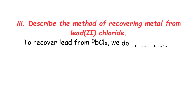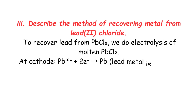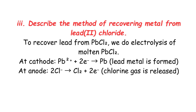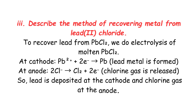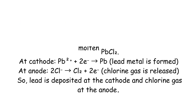Long Question 3: Describe the method of recovering metal from lead(II) chloride. To recover lead from PbCl₂, we do electrolysis of molten PbCl₂. At cathode: Pb²⁺ + 2e⁻ → Pb — lead metal is formed. At anode: 2Cl⁻ → Cl₂ + 2e⁻ — chlorine gas is released. So lead is deposited at the cathode and chlorine gas at the anode.